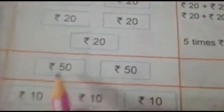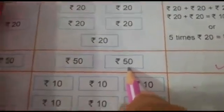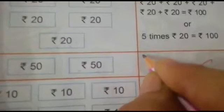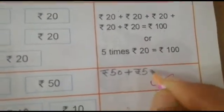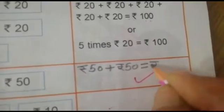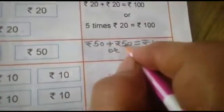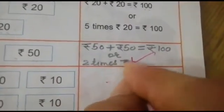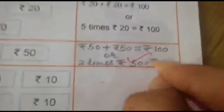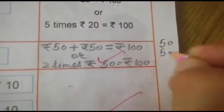Now, which note is this? Rupees 50. And how many notes are there? 1 or 2. It means how many times we have to add rupees 50 to make rupees 100 — 2 times. We will write: rupees 50 plus rupees 50 is equal to rupees 100, or we can write 2 times rupees 50 is equal to rupees 100.